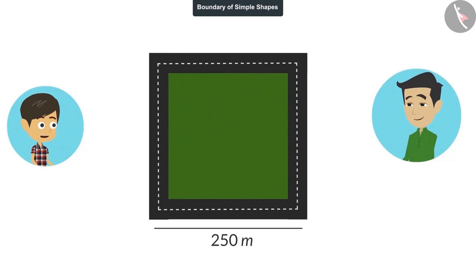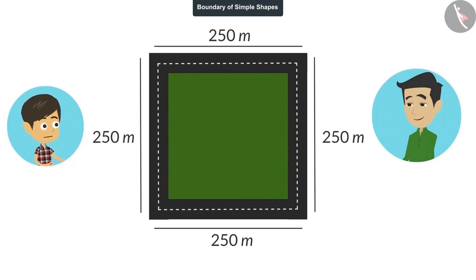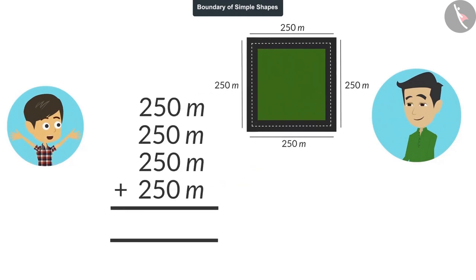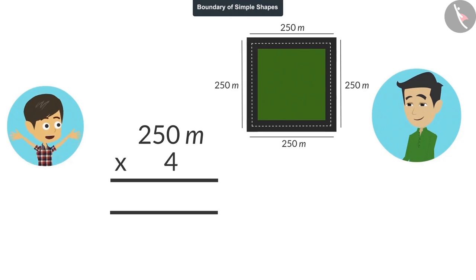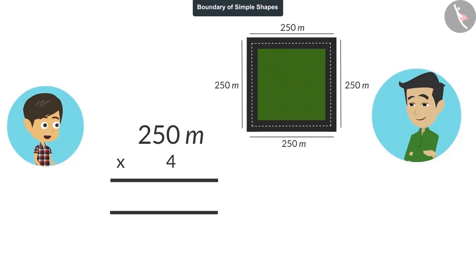Yes. Okay, I will try. Papa, it is a square shape. That means all its sides will be 250 meters each. Now we add these 4 sides. Wait, Rayanj. What happened, Papa? Instead of adding the same number 4 times, it is better to multiply this number by 4. Oh yes, I didn't think of that. Now we can find the length of this boundary by multiplying the length of an edge by 4. So tell me, what is the length of the boundary? 250 multiplied by 4 will be 1000. That means the length of this boundary is 1000 meters.